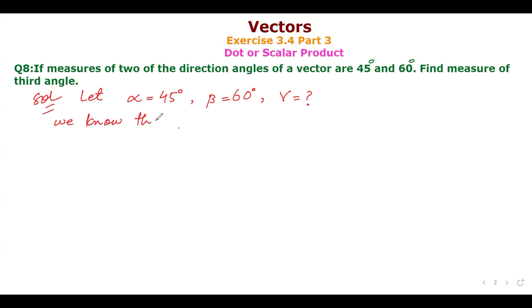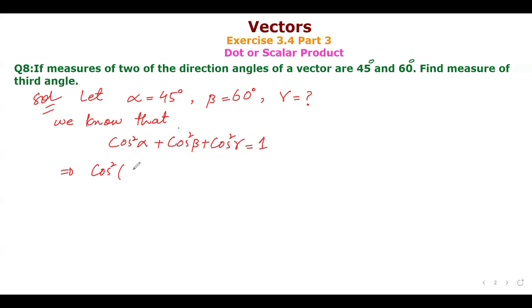We know that cos²α + cos²β + cos²γ = 1. We substitute alpha = 45° and beta = 60°: cos²(45°) + cos²(60°) + cos²γ = 1.